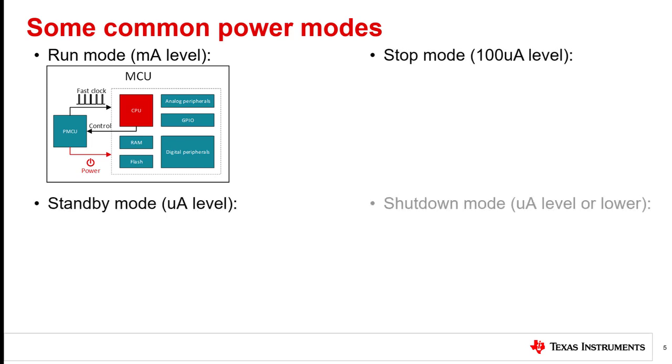Here, we'll break the low power modes further into stop mode, standby mode, and shutdown mode. Recall that the key differences between power modes are typically due to clock and power control. In run mode, all peripherals in the CPU can be running. You can fully use all the functions of the MCU. As mentioned, in this mode, the current would be around the milliamp level.